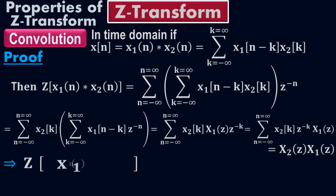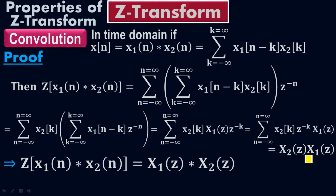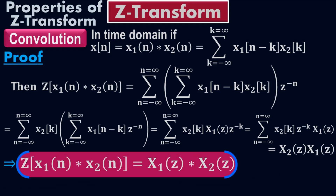This implies that the Z-transform of X1(N) convolved with X2(N) equals X1(Z) times X2(Z), which is the convolution of X1(Z) and X2(Z). The left side equals the right side — and that is what we proved mathematically.